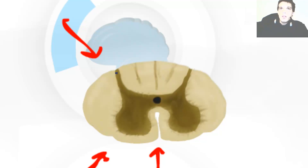The posterior horn is the sensory horn and the anterior horn is the motor horn.